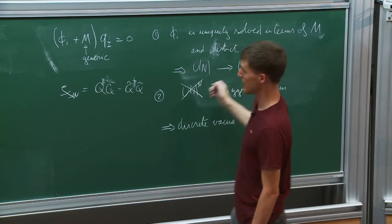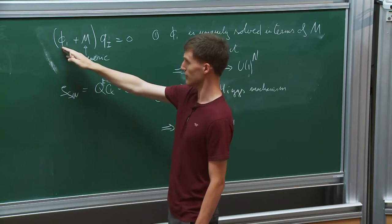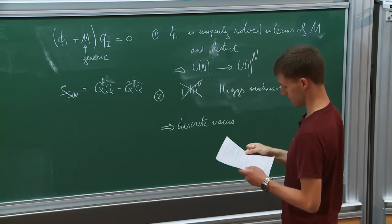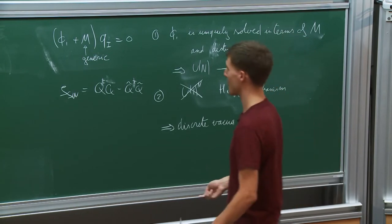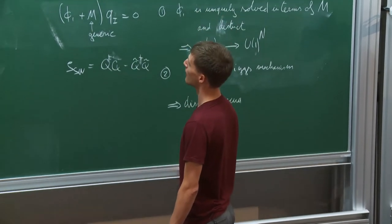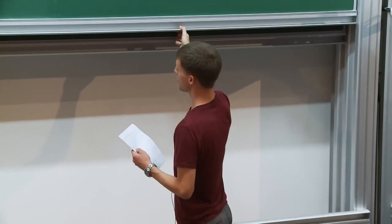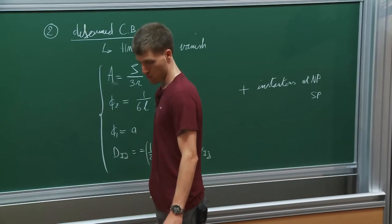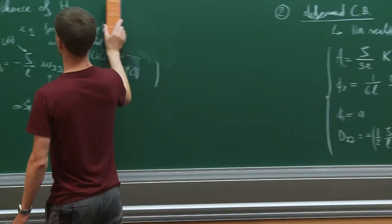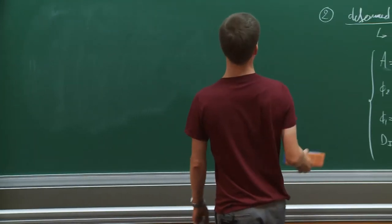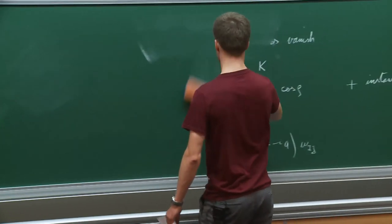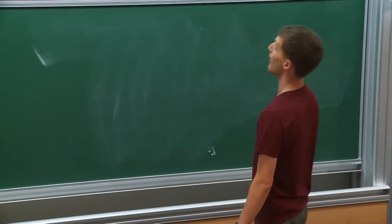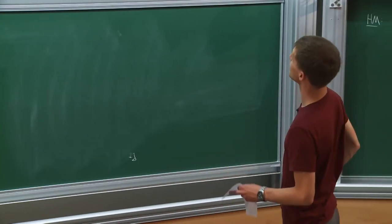Just like in the picture we have discrete points in the Coulomb branch where Higgs branches pop out. The general logic is: first break the gauge group to U(1)^N by turning on non-zero entries in Phi_1, then Higgs these U(1)s by giving a VEV. So that was the second configuration — we now have two types: the deformed Coulomb branch and these discrete vacua.